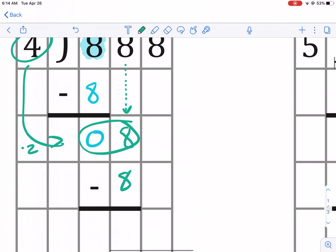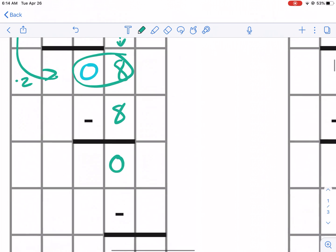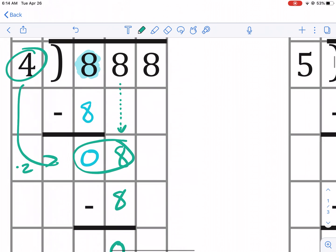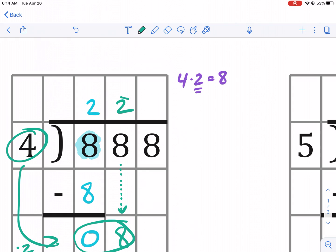But we have to write that result. So 4 times 2 as we said is 8 and now we're going to do that subtraction. 8 minus 8 is 0 and we had a result of 0, but we're not done because that was 88.